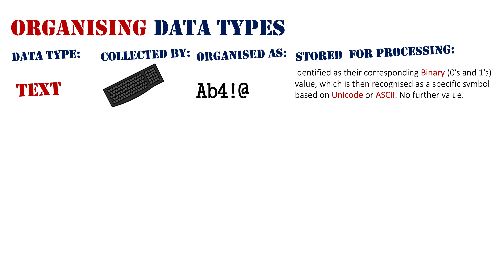Those binary values are recognized as a specific symbol to put on screen based on either Unicode or ASCII. These are the standards for mapping what binary values — which is what actually goes into the system when you press a button on your keyboard — look like on screen as a symbol. They're specifically mapped in Unicode and ASCII: A equals this binary value, capital B equals this binary value, exclamation mark equals this binary value. It is just the character that goes on screen as a symbol.